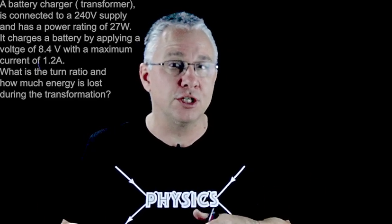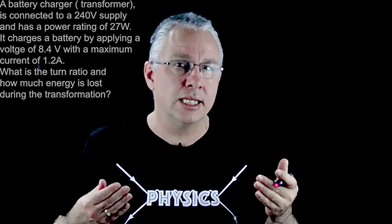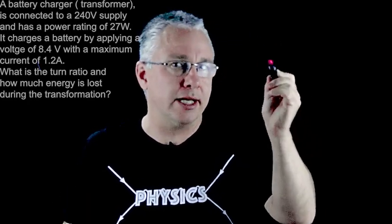So we have an input voltage that is high and an output voltage that is low. Now in this case let's write down the information and let's also do that in a diagrammatic way.